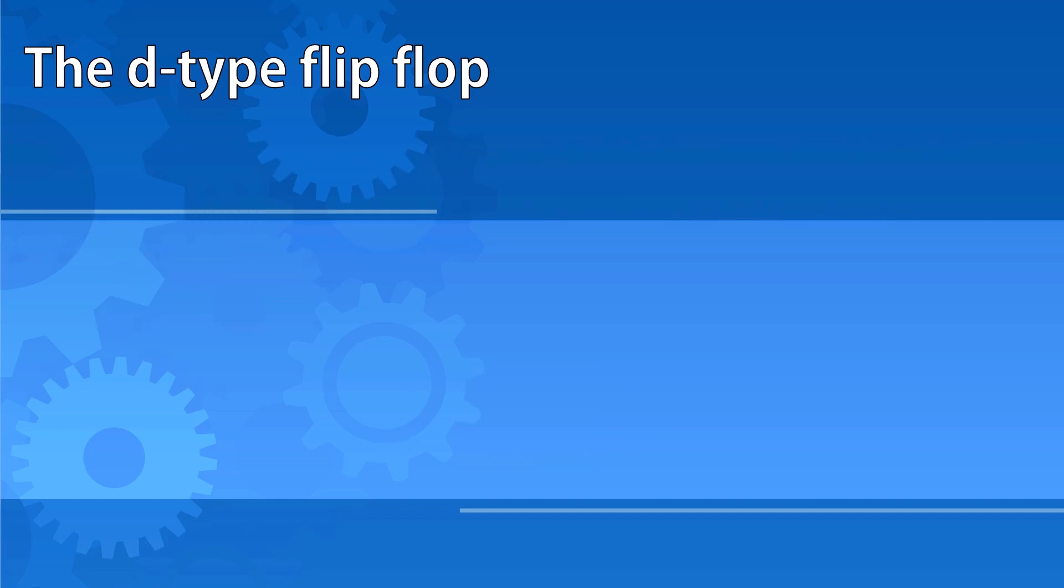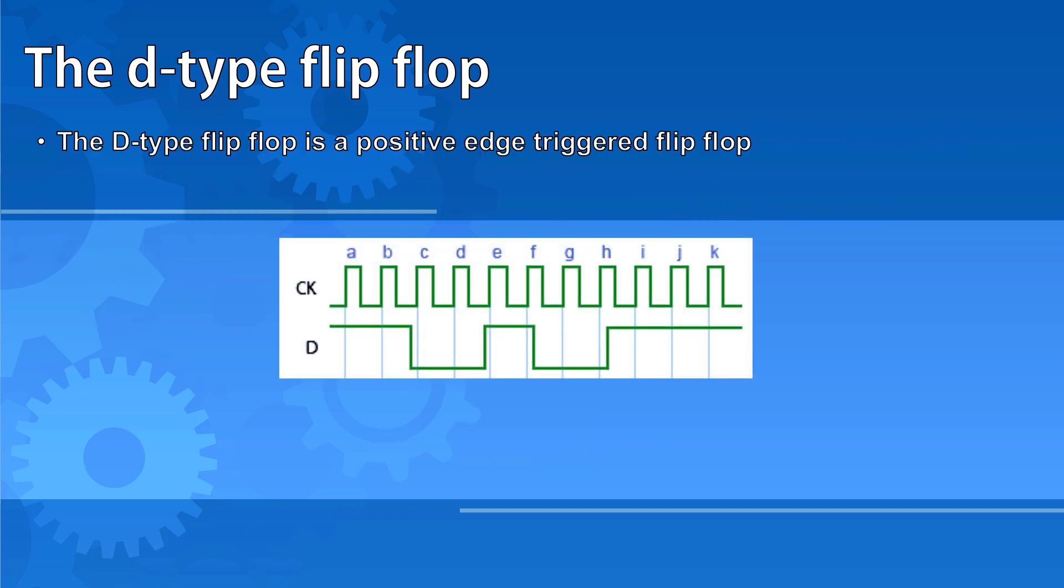The D-type flip-flop is what's known as a positive edge-triggered flip-flop. This means that its state can only be changed from 0 to 1 or 1 to 0 on the uptick of the clock.